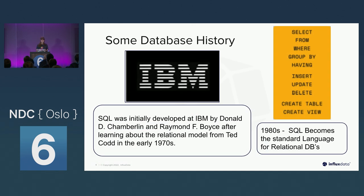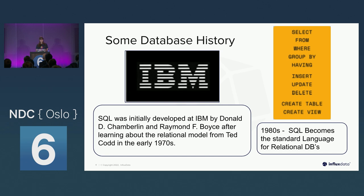Some quick database history. SQL was initially developed at IBM by engineers Donald Chamberlain and Raymond Boyce, who were learning about relational models from Ted Codd in the early 1970s. Codd did his research in the 1970s; they actually developed SQL in 1974. In 1980, SQL became the standard language for relational databases, and these were the first original ten things that you could do with a database. Personally, those are the ones I think we all probably use the most — they were the first ten for a reason.